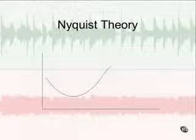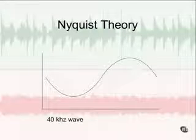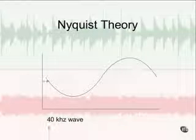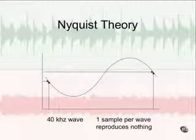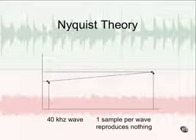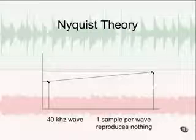Now consider a 40 kHz wave being sampled 44,100 times per second — the wave repeating 40,000 times per second. Our first sample is probably here towards the beginning, and our second is almost at the very end of that same wave cycle. With only one sample per wave, we're not going to reproduce anything. If we take that sine wave away and connect the dots, all we get is some kind of line — maybe diagonal or straight — but we're not reproducing anything close to a 40 kHz sine wave. We need at least two samples per repetition of the wave in order to reproduce it.